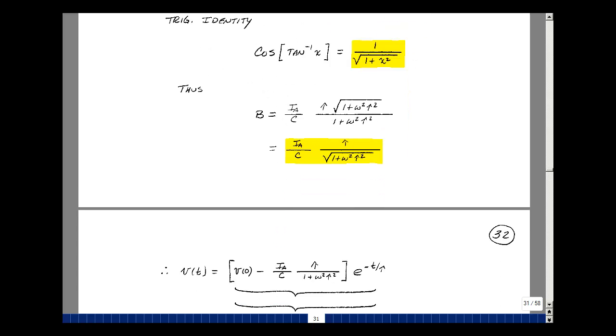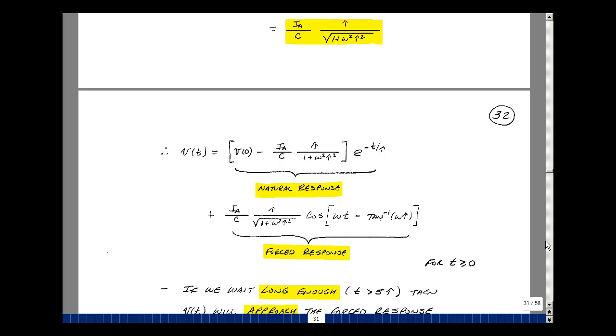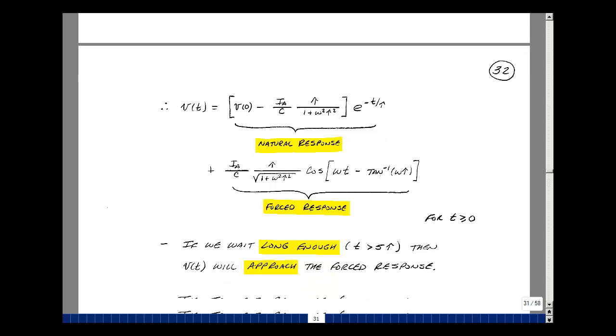It's possible to solve for the unknowns that we had. And so we can see the form of our solution again is some A times E to the minus T over tau plus B times the cosine of omega T plus theta. Now if you wait long enough, transient response dies out, and you approach this answer.